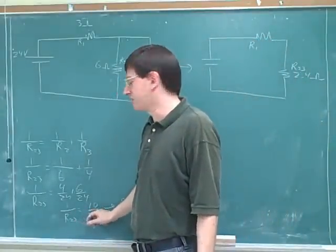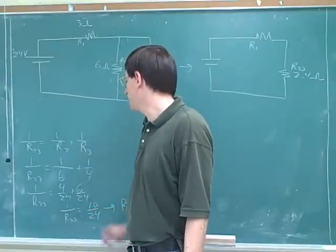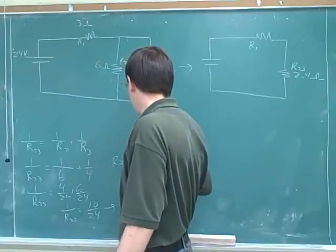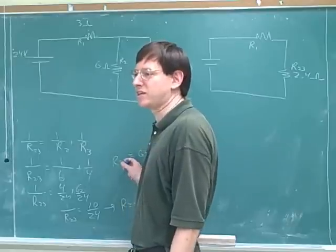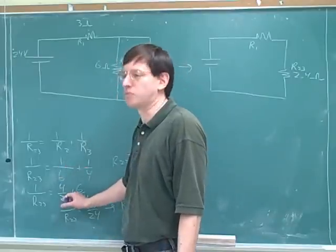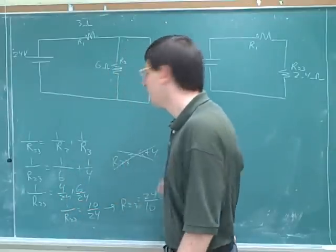By the way, you cannot take the reciprocal of both sides until you have only one fraction on each side. A lot of students might have attempted to take reciprocals here and just say that R23 equals 6 plus 4. That is not legal algebraically. You can't take reciprocals until you've combined these into just one fraction. So you got to combine these into just one fraction and then take the reciprocals.